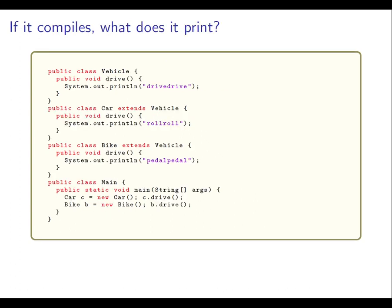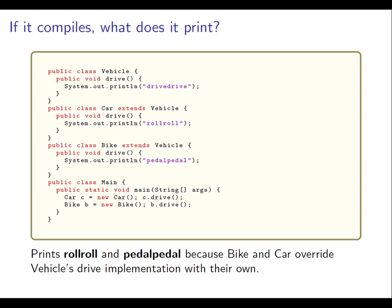What about this one? This one is going to print roll-roll and pedal-pedal, because in this case each of bike and car override vehicle's drive implementation with their own, and then that is the one that's used when you send the message drive to a car and to a bike respectively.